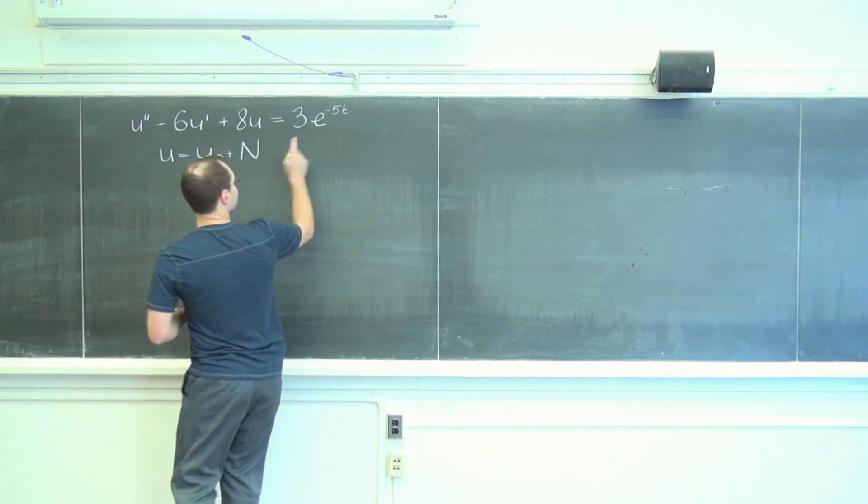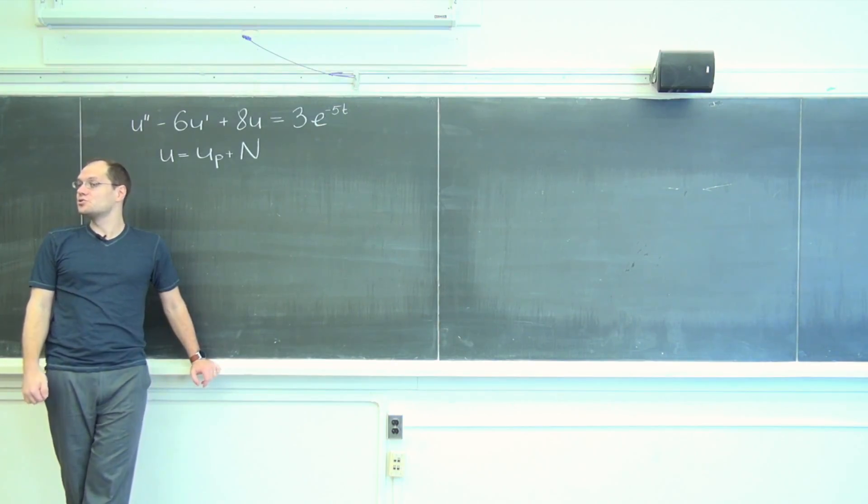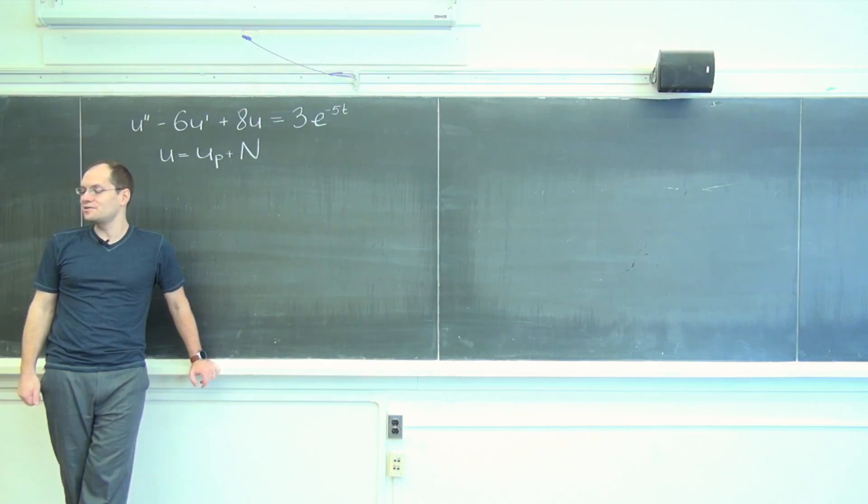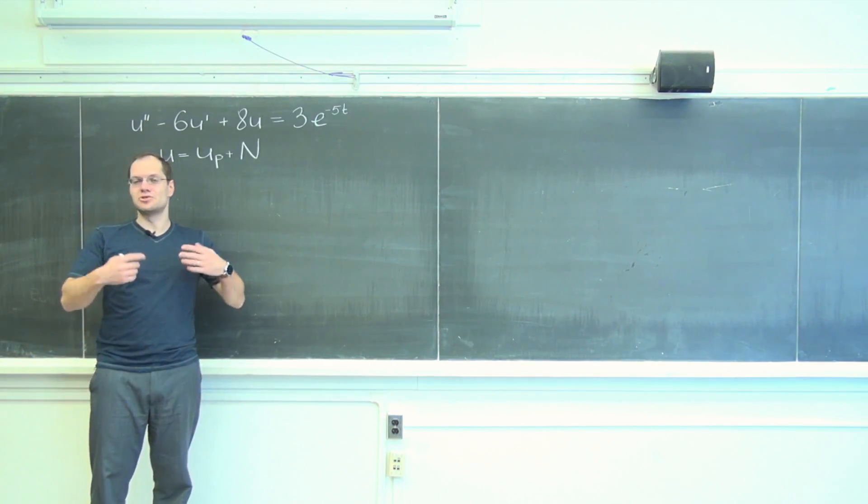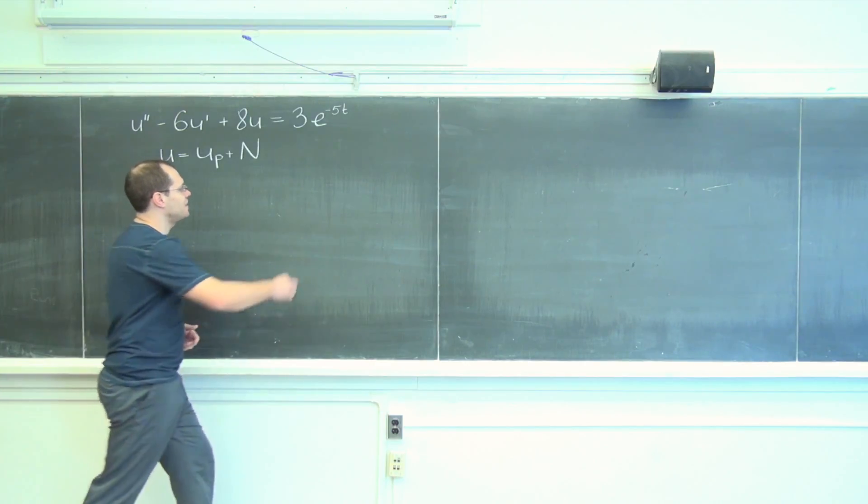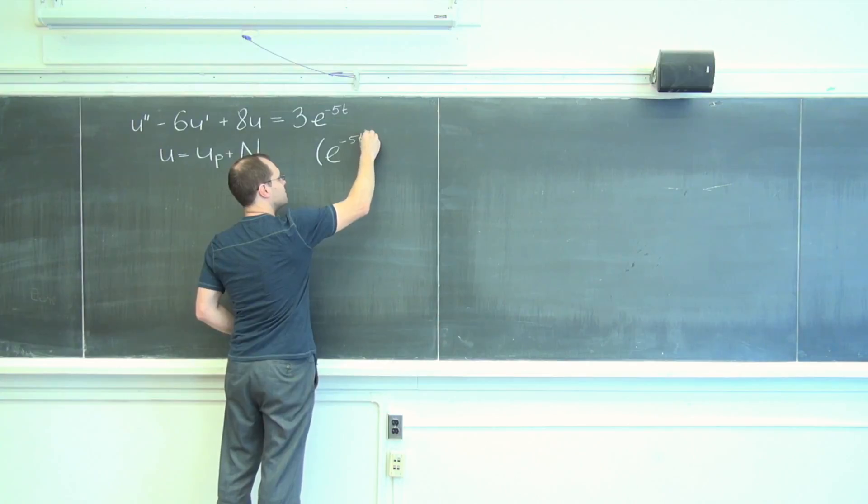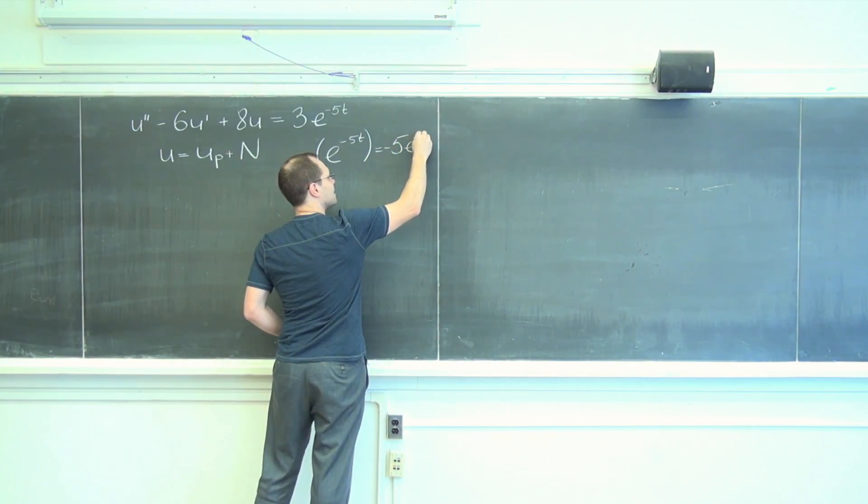So is e to the minus five T an eigenfunction of the derivative operator? Yes, it is. And the corresponding eigenvalue is minus five, because the derivative of e to the minus five T is minus five times e to the minus five T.